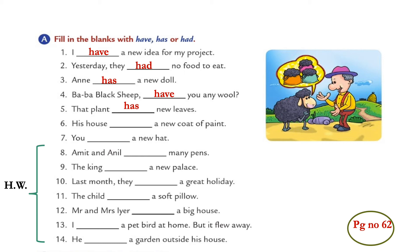Next one: His house dash a new coat of paint. We are talking about one house and this is present tense, so what will we use — has or have? Yes, has. Last one: You dash a new hat. With you, we will always use have. You have a new hat.